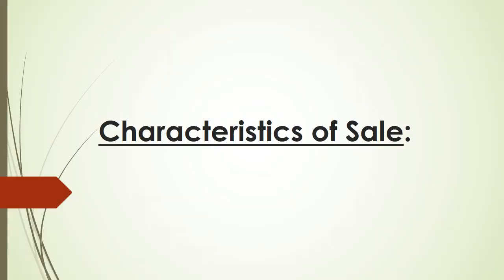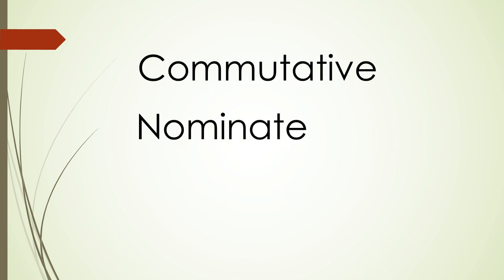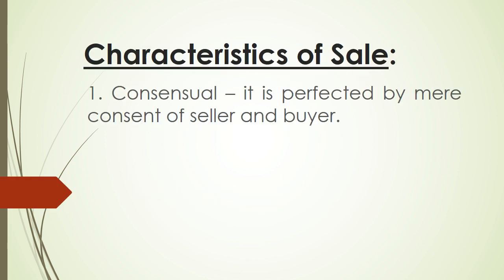Now, what are the characteristics of the contract of sale? As a contract, sale has the following characteristics: consensual, bilateral, onerous, commutative, nominate, and principal. As a consensual contract, sale is perfected by mere consent of the seller and buyer. This means it does not require any formality as a general rule.